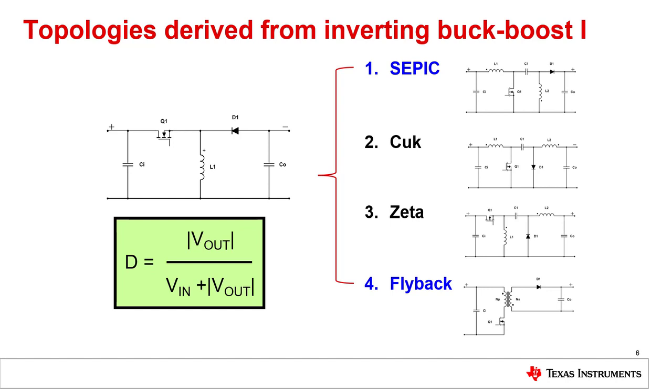From the basic buck-boost topology, we can derive a lot of different new topologies, for example SEPIC, CHUCK, CETA or FLYBACK. SEPIC and FLYBACK are marked in blue because these are the ones that are used most often. FLYBACK especially for cost reasons or if isolation is needed, and SEPIC for EMI reasons.